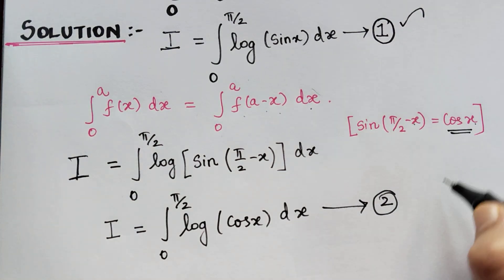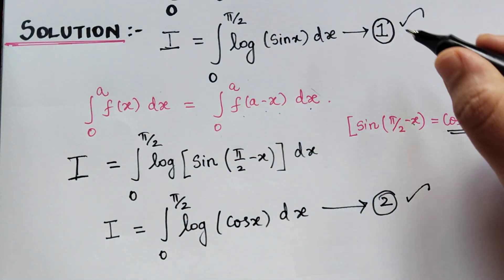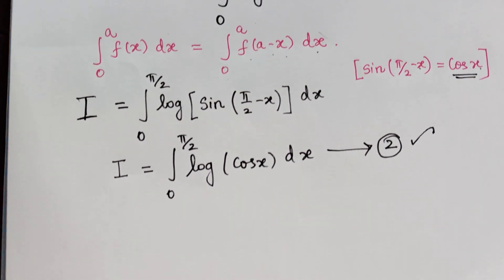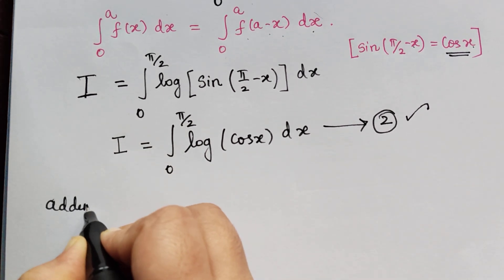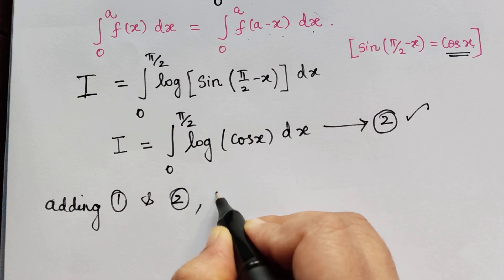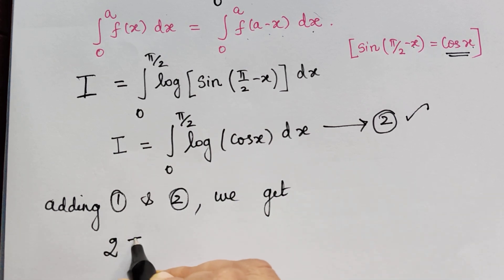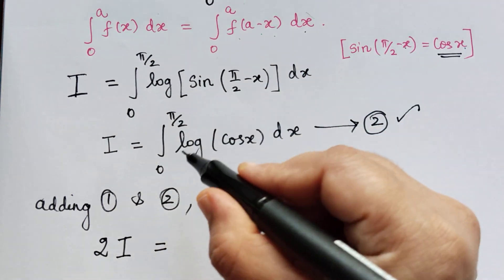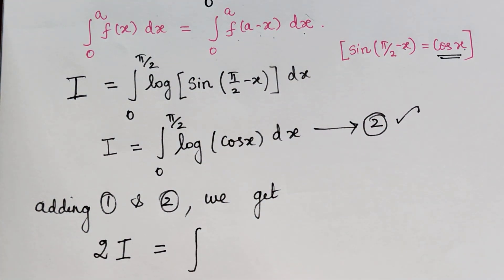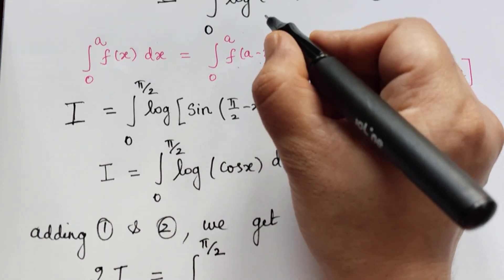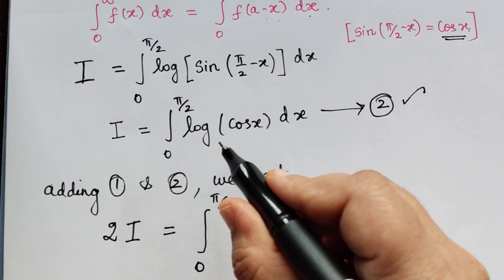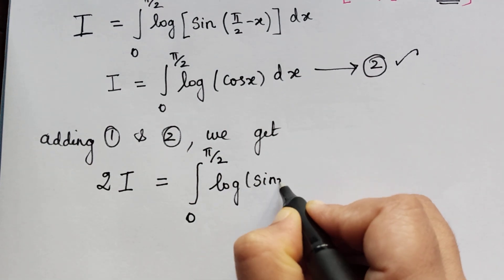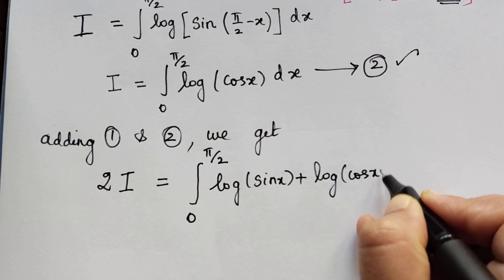Now equation 1 and equation 2 are both equal to capital I, so these two equations can be added. On the left we have I + I = 2I. On the right, both integrals have the same limits 0 to π/2, so they can be combined into one integral: 2I = ∫₀^(π/2) [log(sin x) + log(cos x)] dx.